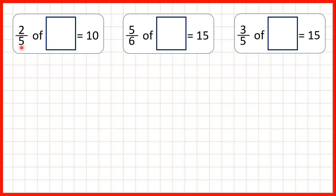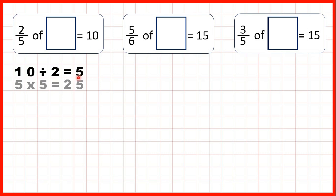So, two-fifths of what equals 10? We can do 10 divided by 2 — divide by the numerator — to get 5. Then we take that 5 and multiply by the denominator to get 25 as our total quantity. That makes sense because 25 divided by 5 is 5, and then 5 times 2 is equal to 10.